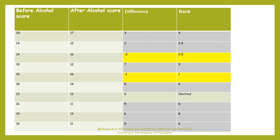You'll notice we've got some shared ranks. We've got a minus 2 and a 2 which, because we're ignoring the signs when ranking, both got the tied value of 2.5. And we've got three differences of 5, so they all got the rank value of 6.